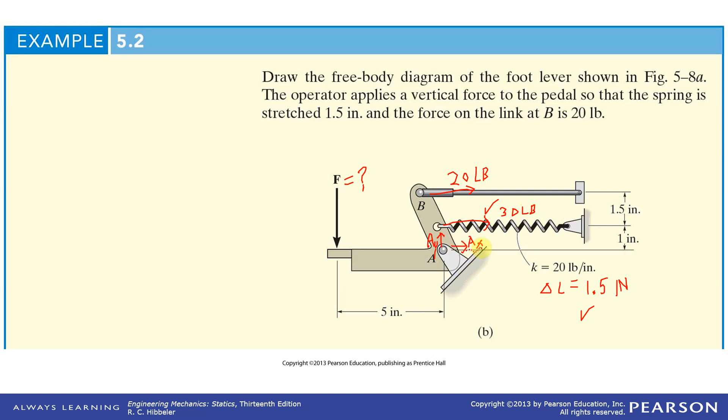So Ax plus 30 pounds plus 20 pounds equals zero. Ax equals negative 50 pounds. Ay is going to be equal to negative F. So both of these are unknown at this time. We got to get Ay some other way, so let's look at the moment. We're going to solve for F. We're not going to find Ay. We can find it after we solve for F, but F is the quantity of interest, what we really want to know.